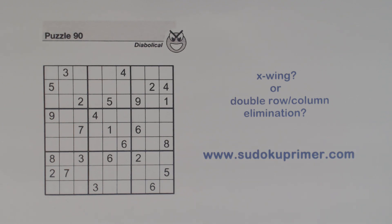Double elimination, as its name implies, is used to eliminate rows or columns. X-wings are used to remove candidates. In this video I'm going to compare and contrast these two techniques. I'll probably do a video soon about X-wings too.